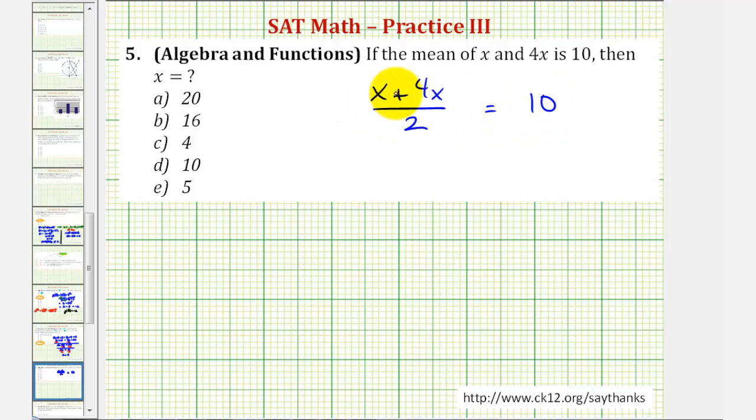And now we'll solve for x. Well, x plus 4x, or if it helps, 1x plus 4x would be 5x. So this simplifies to 5x divided by 2 equals 10.